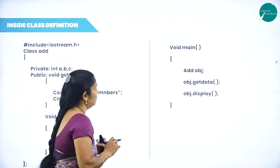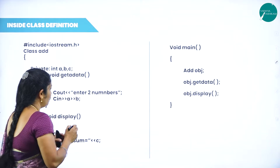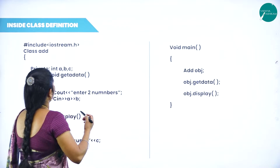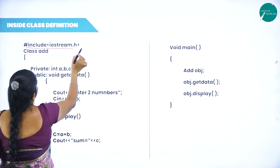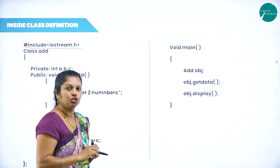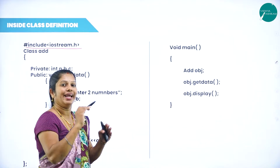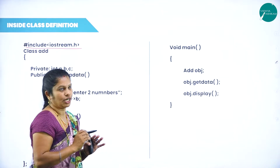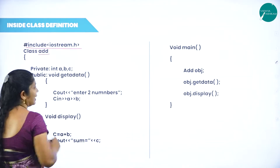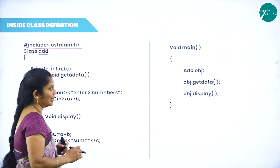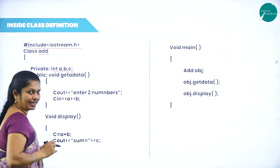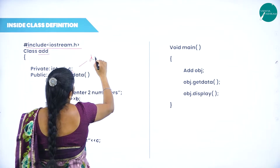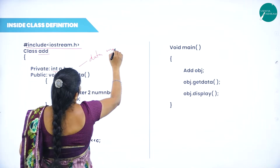Now we will explain with an example. Consider I want to perform the addition of two numbers. First I am going to declare the header file — hash include iostream.h, which is the supporting header file to perform cin as well as cout operations. Then the class name here we are given as add.